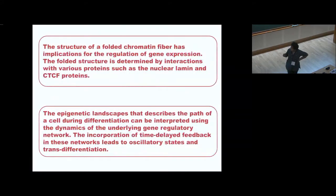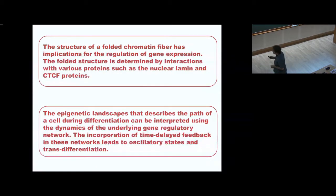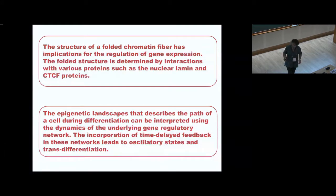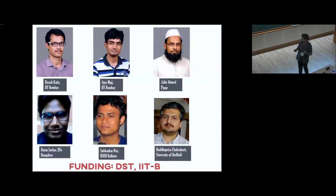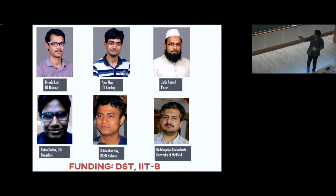In conclusion: the structure of the folded chromatin fiber — one of the major determining factors is interactions with proteins such as nuclear lamin proteins. There is also a different class of proteins, CTCF proteins inside the nucleus, which we are currently modeling. Interaction with these proteins often determines the large-scale coarse-grained properties of the structure. There are two posters: Bibhash has a poster on epigenetic landscapes and Ajay has a poster on chromatin folding. Thank you — these are the other collaborators.